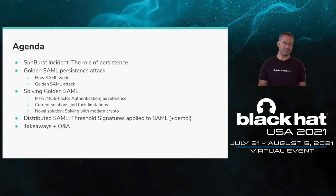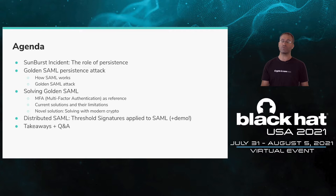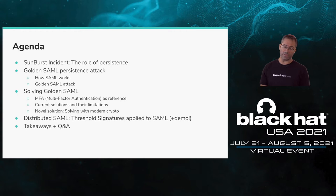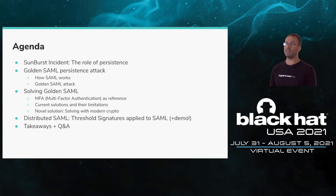So what are we going to talk about today? We'll start with the Sunburst incident, give some context, and then move quickly to the Golden SAML persistent attack. Don't worry if you don't know how SAML works — we will explain that. Then we'll talk about how attackers can abuse SAML functionality to create the Golden SAML persistent attack, how to solve it, detail MFA as a reference solution, show current solutions and their limitations, and suggest our novel solution based on advanced cryptographic techniques. Matan will show our exact solution including a demo. We'll conclude with takeaways and Q&A.